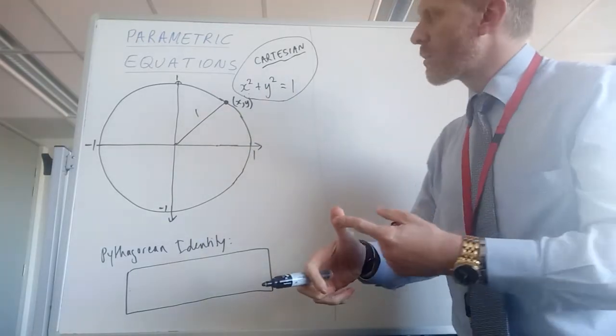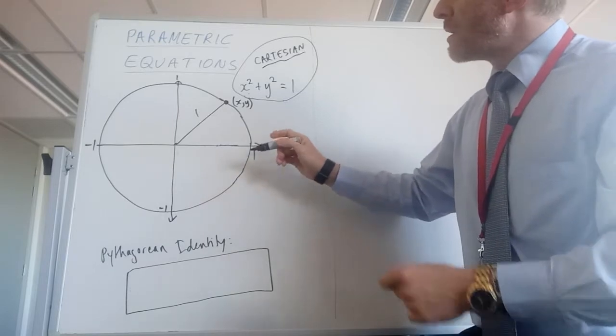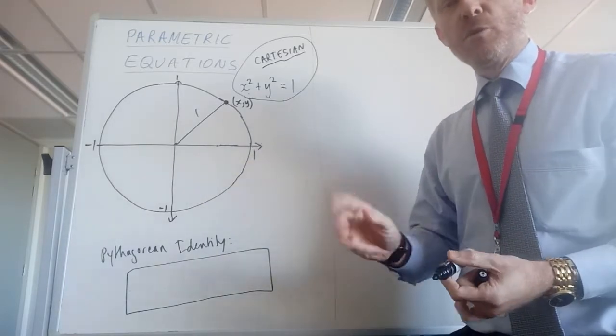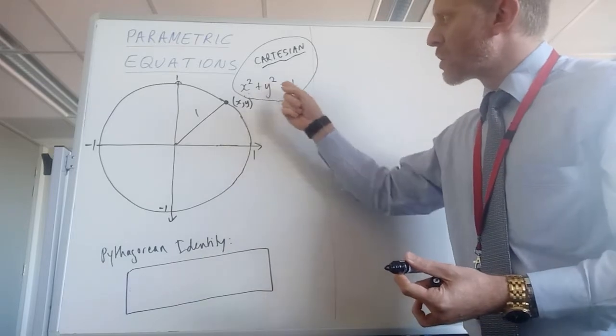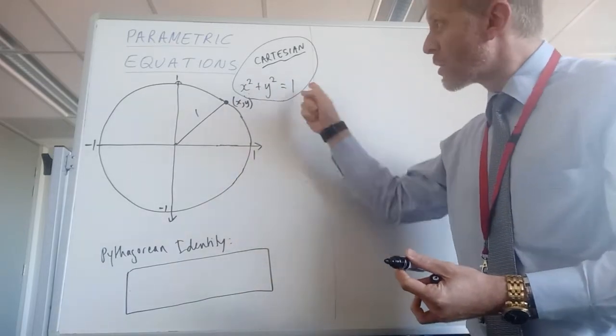There'd be an x ordinate and there'd be a y ordinate. And I want to bring in a third variable. We've got x, we've got y. The Cartesian equation only has x and y and it relates them together in a single equation.